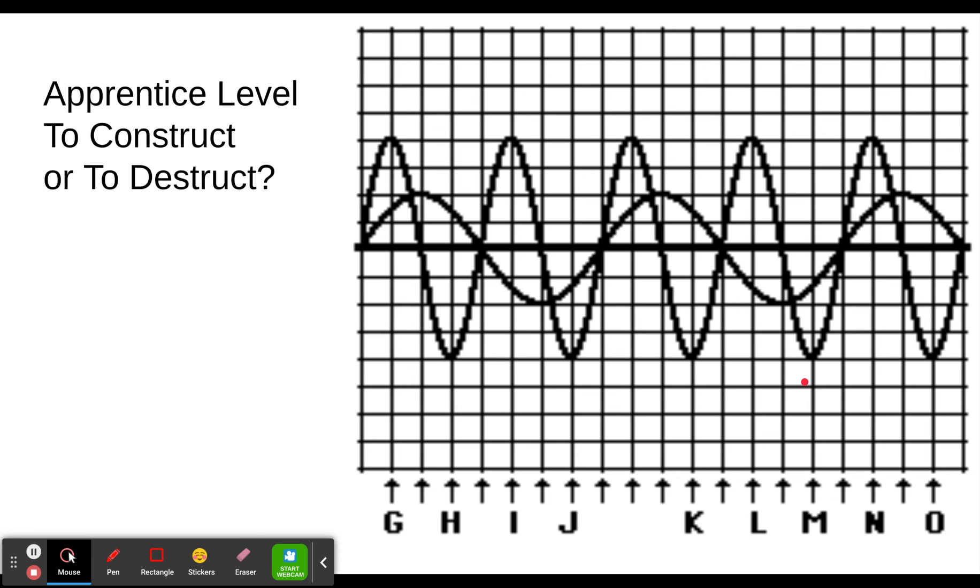The apprentice level asks you to go through and look at like at point G. Well, both of them are pushing up, so this is going to be constructive interference. At letter H, this one's pushing down, this one's pushing up, so they will cancel each other out to some degree. At I, we have a negative side and a positive side, so that'll be destructive.